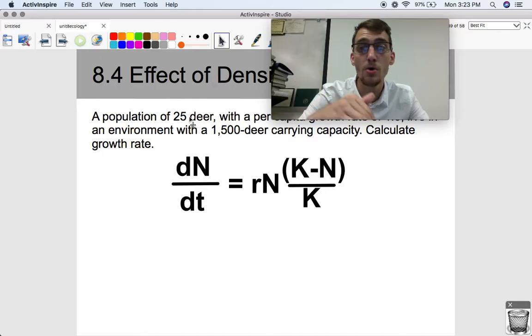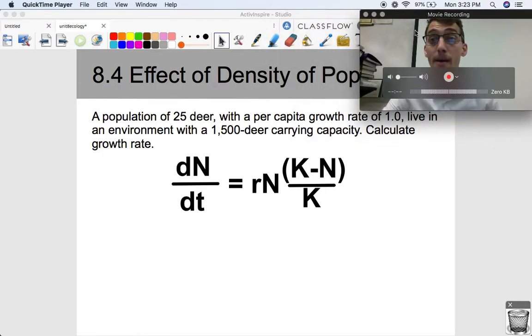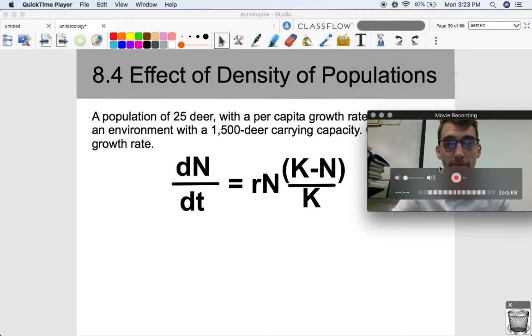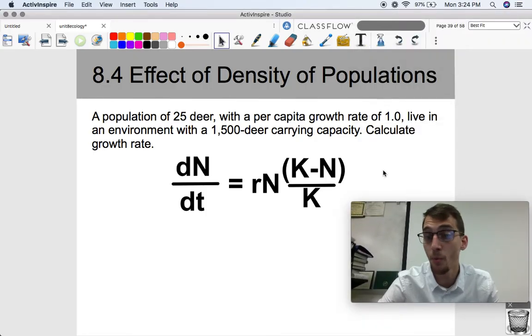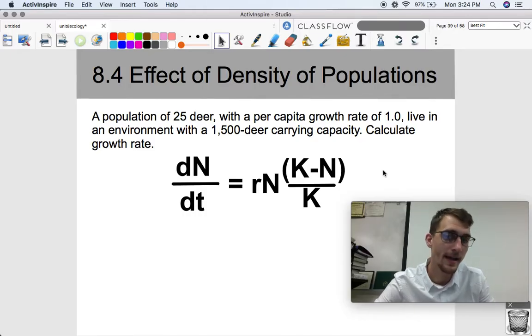So here's an example. A population of 25 deer with a per capita growth rate of 1.0 live in an environment with a 1,500-deer carrying capacity. I just made this up off the top of my head, kind of.